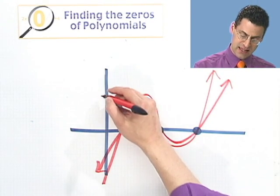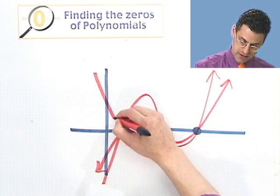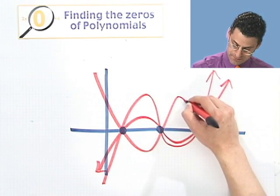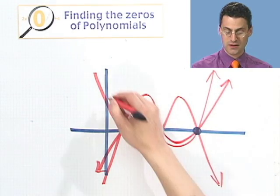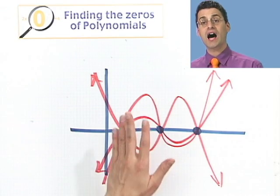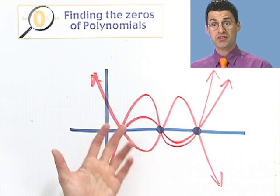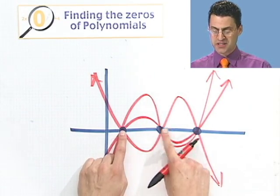You could also imagine one that has like a negative, sort of an unhappy one. Comes down like this, goes up, comes down. So in fact, there are a lot, in fact, infinitely many possible cubics if I just tell you the roots.